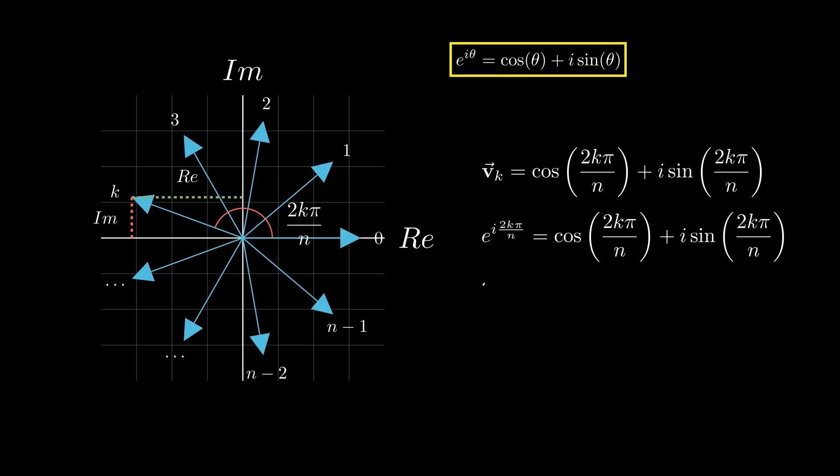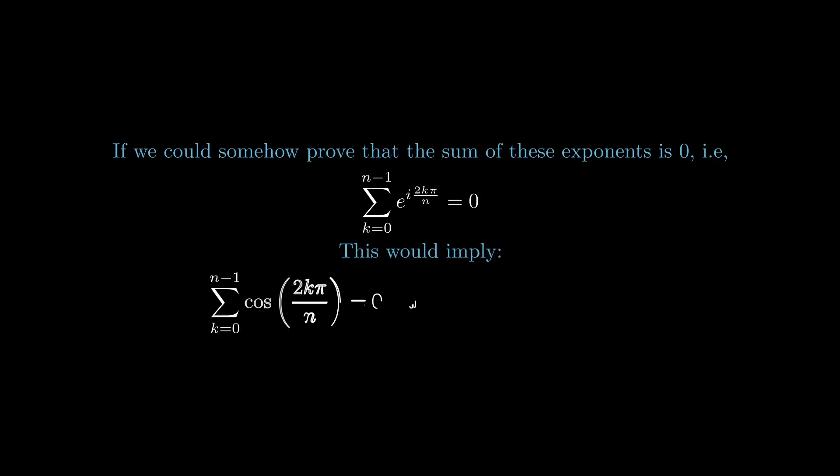So, the sum of all these vectors is the sum of e to the i(2kπ/n) from k equals 0 to n minus 1. If we can somehow prove that the sum of these exponents is 0, then both its real and imaginary parts also must be 0. This would imply that the sum of cos(2kπ/n) equals 0 and the sum of sin(2kπ/n) equals 0 from k equals 0 to n minus 1.